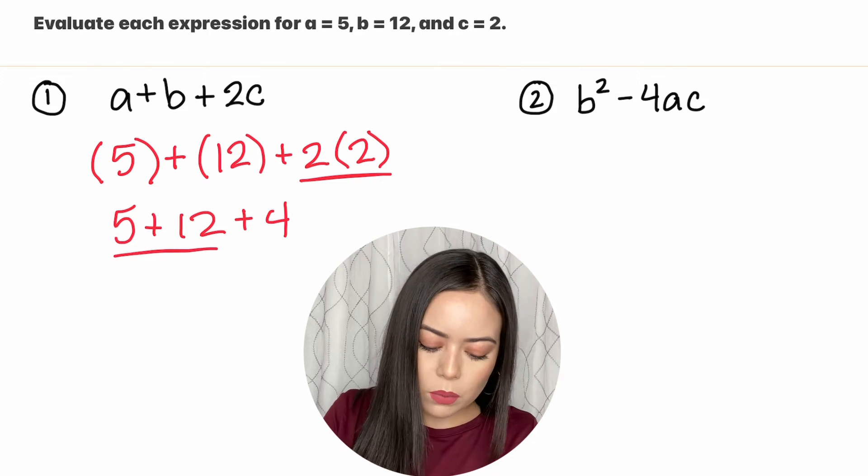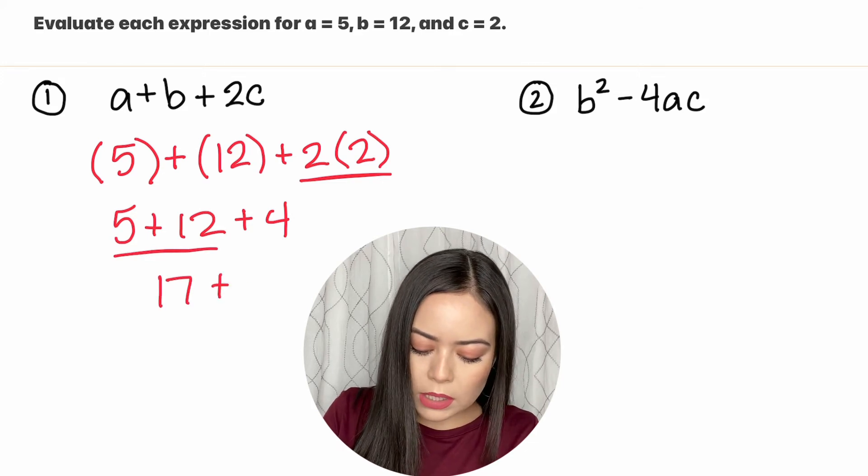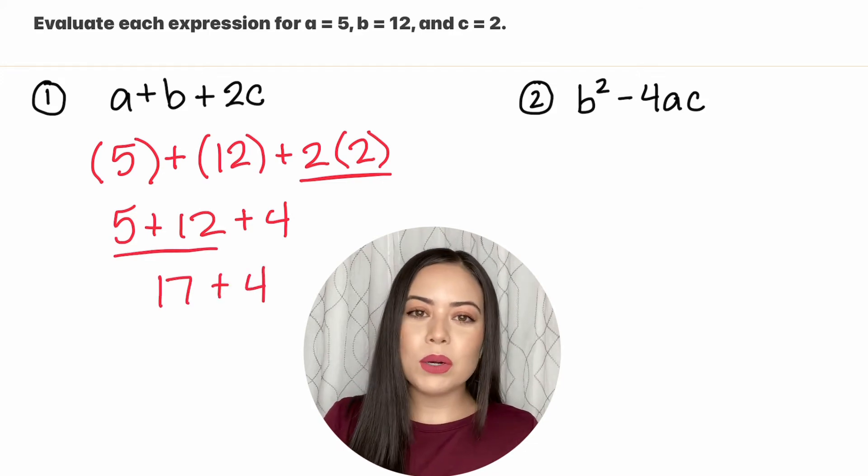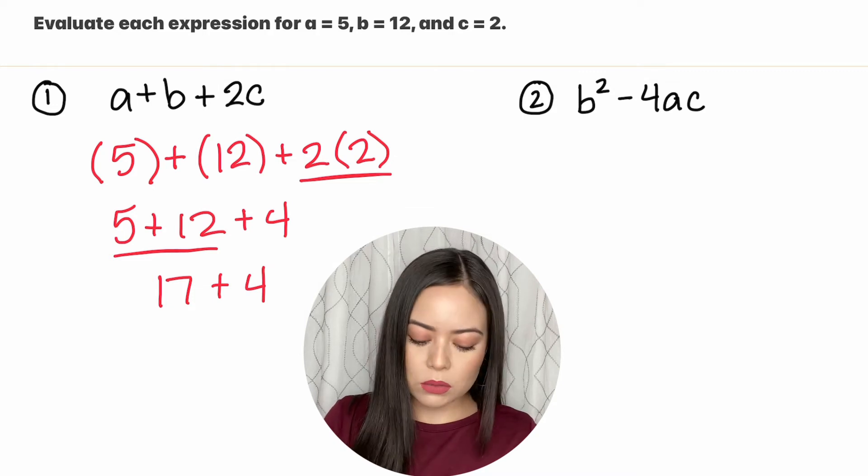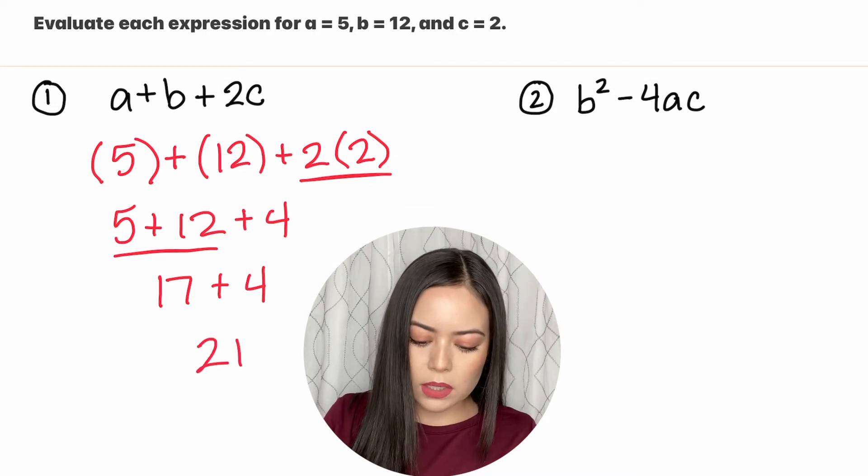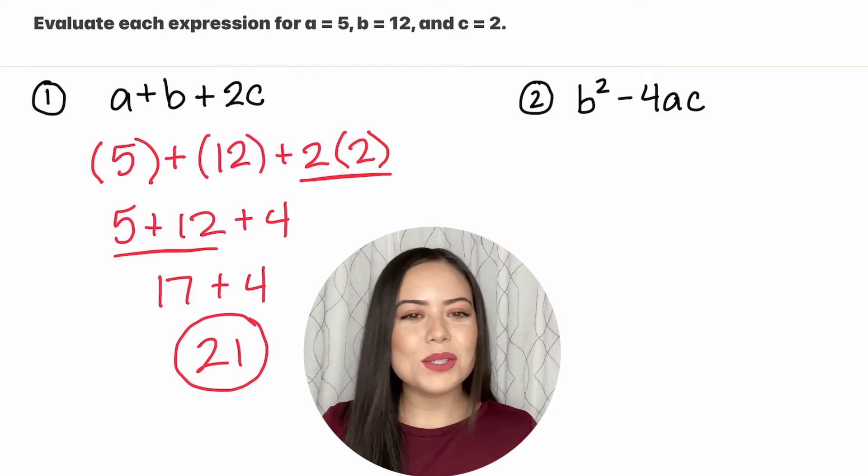Now again order of operations says to add from left to right. So let's do 5 plus 12 which is 17, bring down the 4, and then lastly we're going to simplify 17 plus 4 which is 21. So the answer to question one is 21.